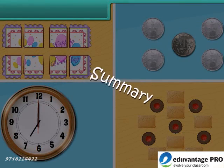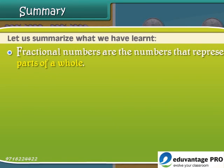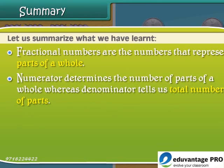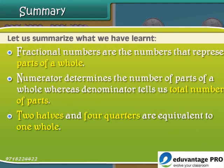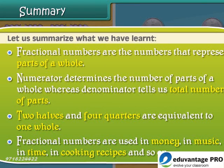Summary. Let us summarize what we have learned. Fractional numbers are the numbers that represent parts of a whole. The numerator determines the number of parts of a whole, whereas the denominator tells us the total number of parts. Two halves and four quarters are equivalent to one whole. Fractional numbers are used in money, in music, in time, in cooking recipes, and so on.